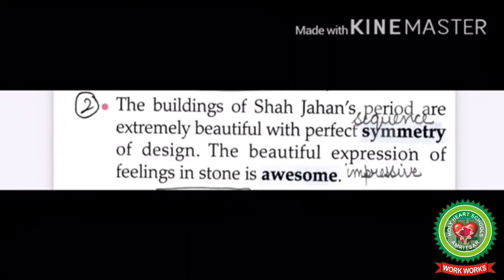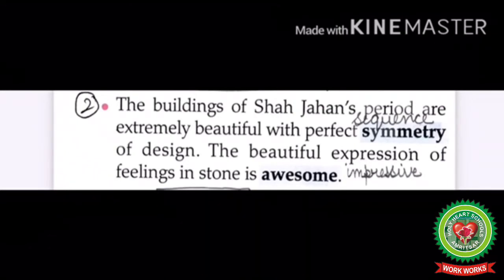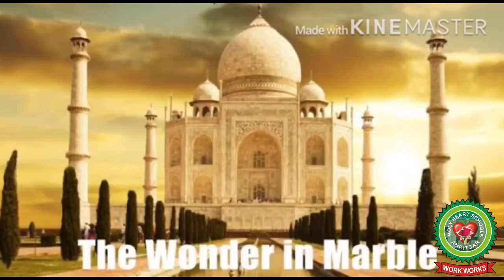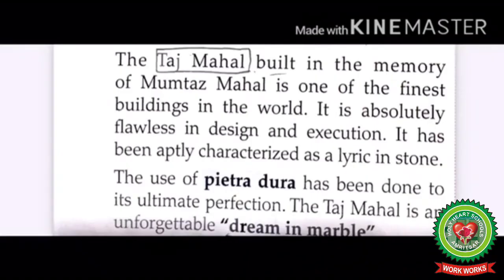The buildings of Shah Jahan's period are extremely beautiful with perfect symmetry of design — symmetry means sequence. The beautiful expression of feelings in stone is awesome or impressive. The Taj Mahal, built in the memory of Mumtaz Mahal, is one of the finest buildings in the world. It is absolutely flawless in design and execution.